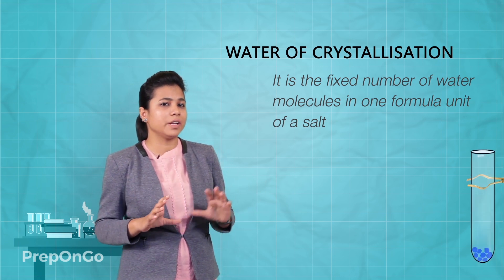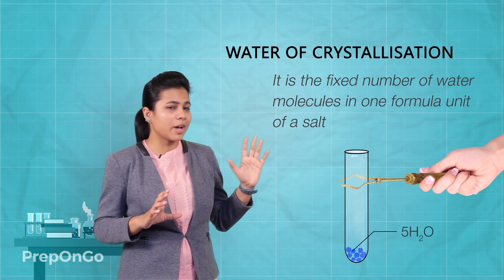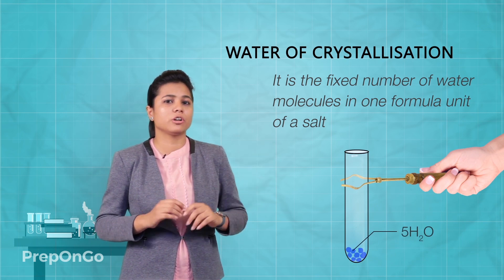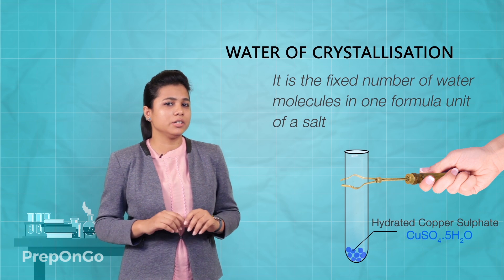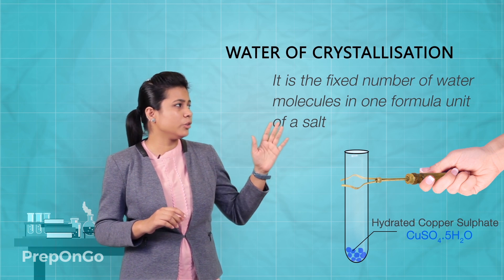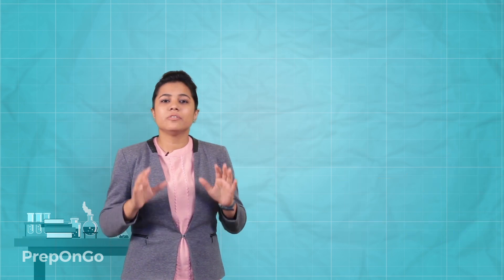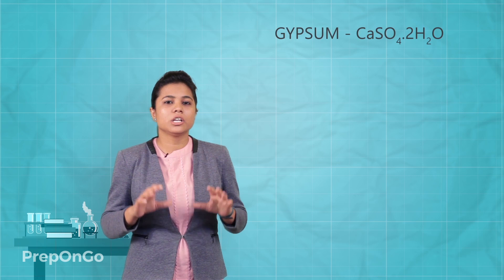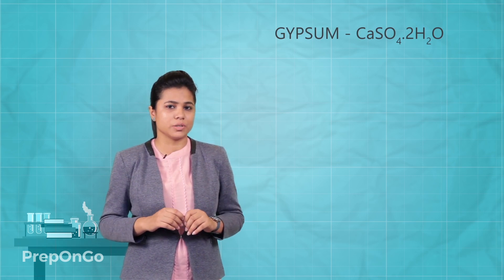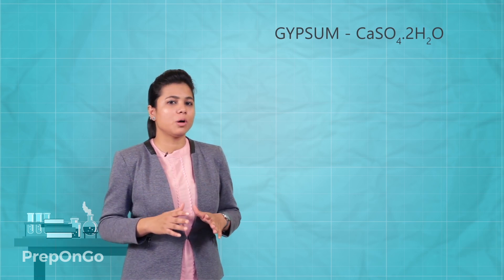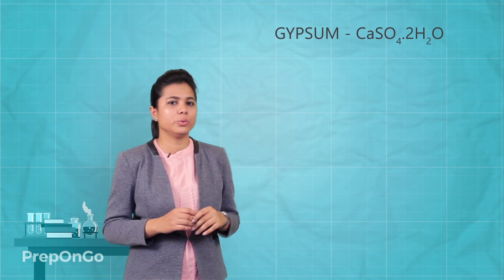Copper sulphate has five molecules of water as water of crystallization, so its formula is CuSO4·5H2O. We have another salt which has water of crystallization, called gypsum. It has two molecules of water as water of crystallization, with the formula CaSO4·2H2O.